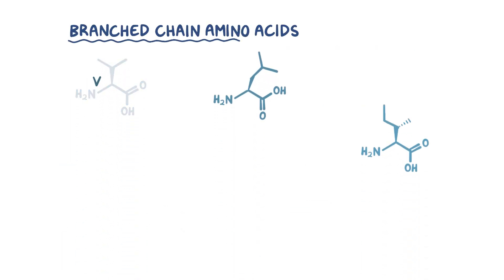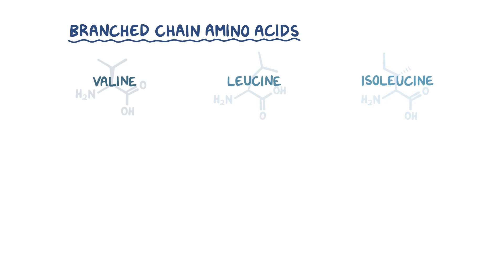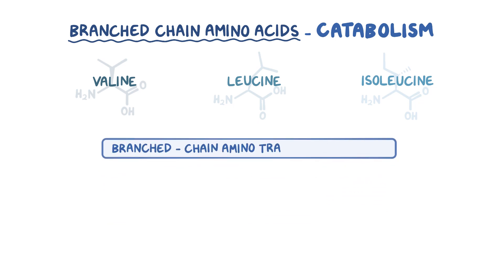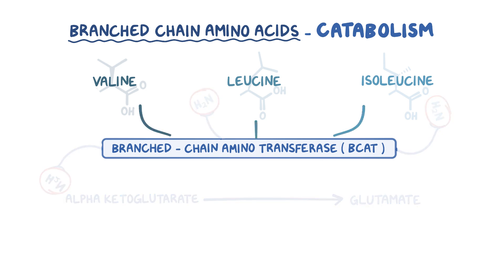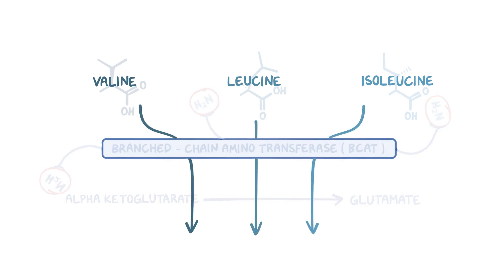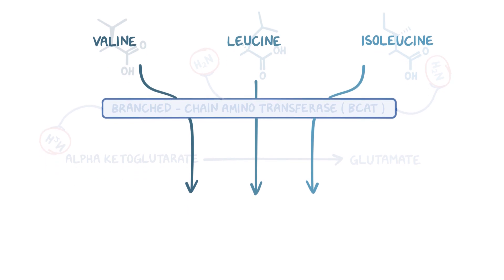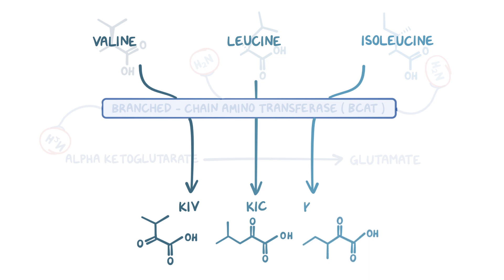Branched-chain amino acids — valine, leucine, and isoleucine — require special steps during their catabolism. First, the enzyme branched-chain aminotransferase, or BCAT, strips off their alpha amino group and transfers it to an alpha-ketoglutarate to form glutamate. This also converts the branched-chain amino acids into branched-chain keto acids. Valine is converted into alpha-ketoisovalerate, or KIV; leucine is converted into alpha-ketoisocaproate, or KIC; and isoleucine is converted into alpha-keto-beta-methylvalerate, or KMV.